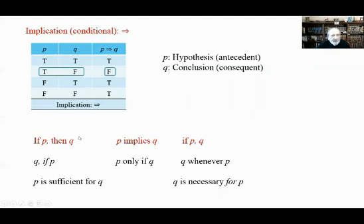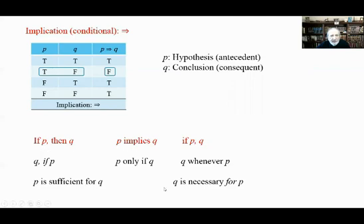There are several main ways to express P implies Q: 'If P then Q,' 'P implies Q,' 'P, Q.' Also valid are: 'Q if P,' 'P only if Q,' 'Q whenever P,' 'P is sufficient for Q,' 'Q is necessary for P.' When dealing with 'whenever,' 'necessary,' or 'sufficient,' I highly recommend rewriting the proposition in the standard form 'P implies Q' or 'If P then Q' so you can work with it more easily.